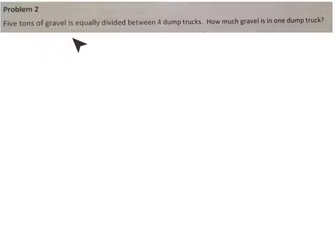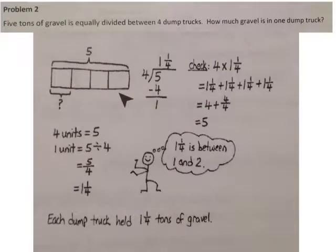So we have five tons of gravel divided between four dump trucks. In this problem, our tape diagram looks just like our previous one except our whole is five instead of eight. So we know that we have four units, and they total five. If four units equal five, then one unit is five divided by four. That's our division sentence, five divided by four.